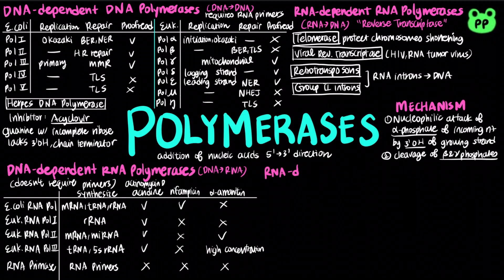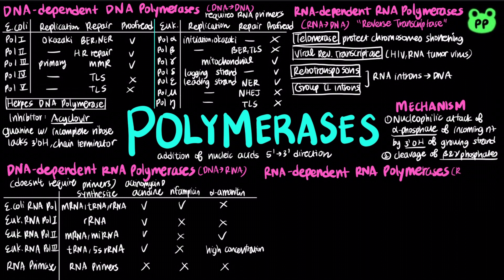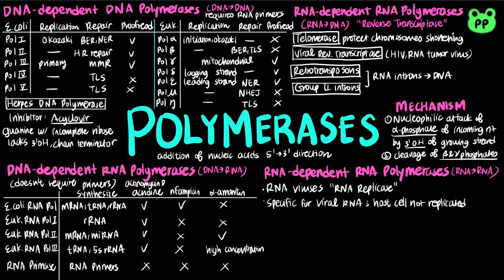RNA-dependent RNA polymerases synthesize RNA molecules from RNA template. They are found in many RNA viruses, in a system known as RNA replicase, which is specific for the RNA of their own viruses, and the RNAs of the host cell are not replicated.